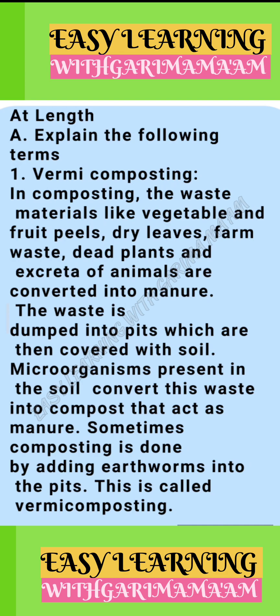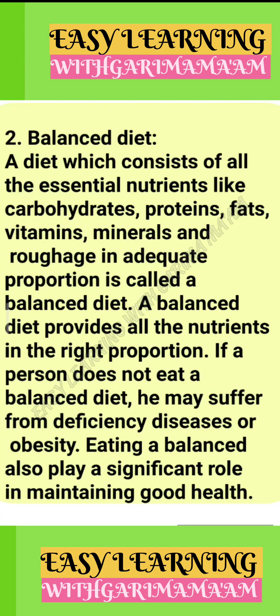Vermicomposting: In composting, waste materials like vegetable and fruit peels, dry leaves, farm waste, dead plants, and excreta of animals are converted into manure. The waste is dumped into pits which are then covered with soil. Microorganisms present in the soil convert this waste into compost that acts as manure. Sometimes composting is done by adding earthworms into the pits — this is called vermicomposting.